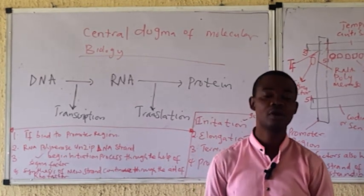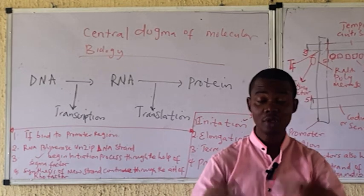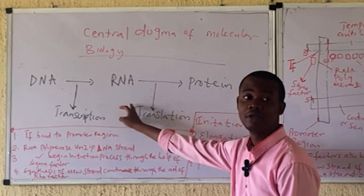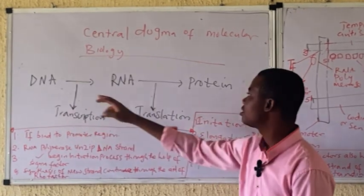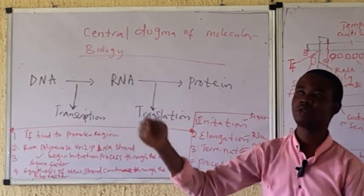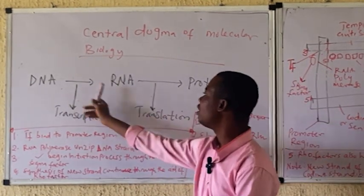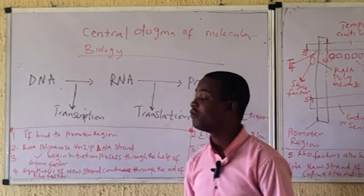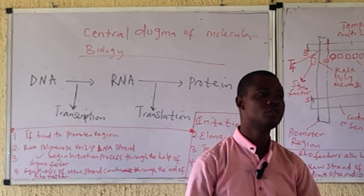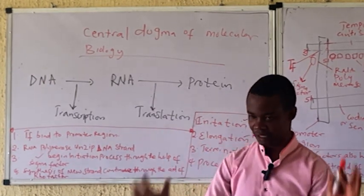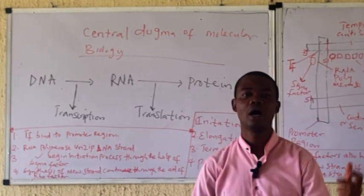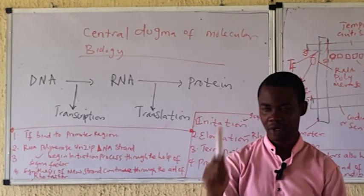The Central Dogma of Molecular Biology can be simply described as the synthesis of RNA using DNA, and the synthesis of protein from DNA. We can simply say from DNA to RNA, and from RNA to protein. We synthesize RNA using DNA as the template, and we synthesize protein using RNA as the template.